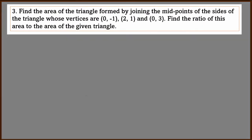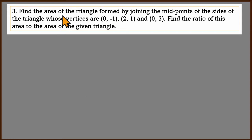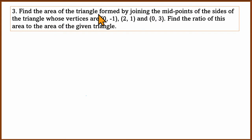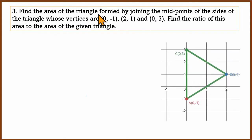Another interesting question: find the area of the triangle formed by joining the midpoints of the sides of the triangle whose vertices are given. We join the midpoints to form a new triangle, find its area, and then find the ratio of this area to the area of the given triangle. We need to use both the midpoint formula and the area of the triangle formula.